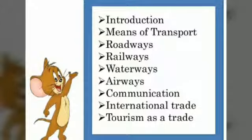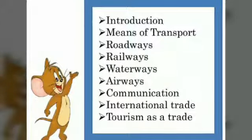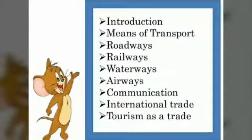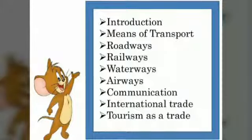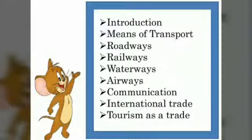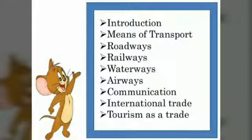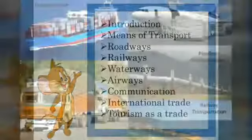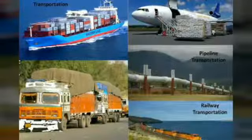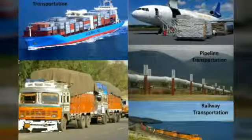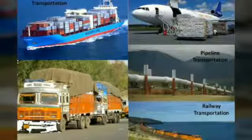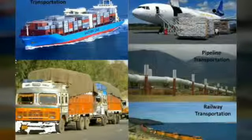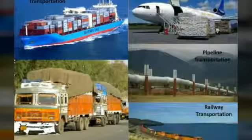Air travel is especially important in the North Eastern states (Uttari Purvi Rajyon Mein Vayu Parivahan Adhik Mahatvapurn). In the year 1953, Vayu Parivahan was nationalized. Practically, Indian Airlines — also known as Alliance Air — along with several private airlines, provide domestic air services.